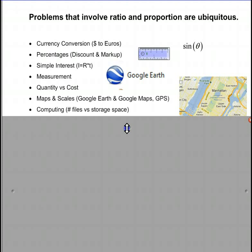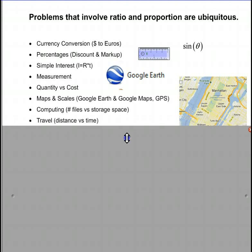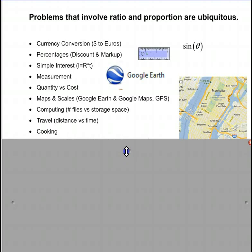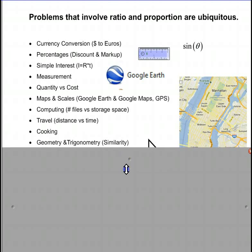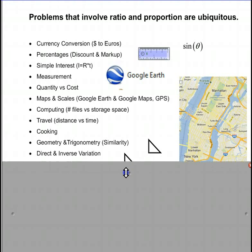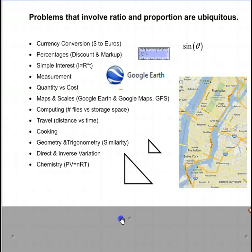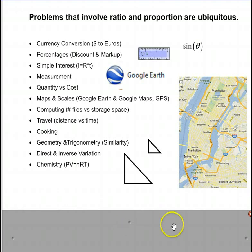Computing the number of files versus storage space required, travel, distance versus time, cooking, weights and measures, geometry and trigonometry, relying on similarity and right angles, direct and inverse variation, chemistry. It's the start of a fairly big list.